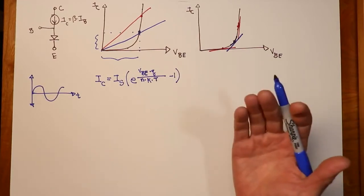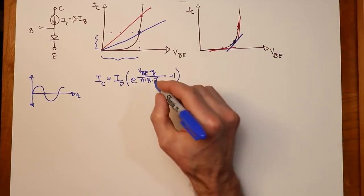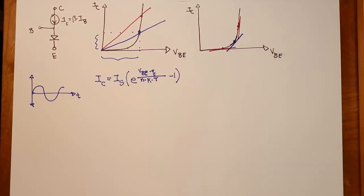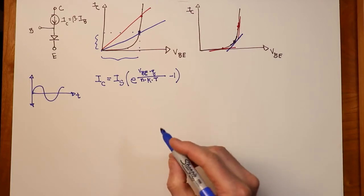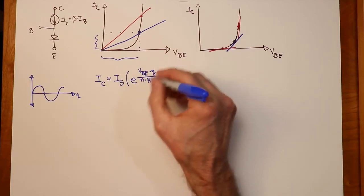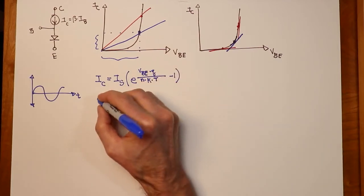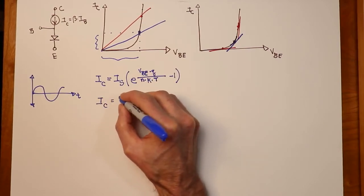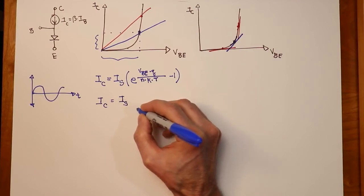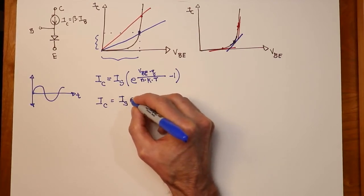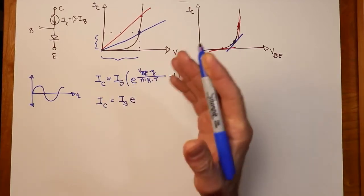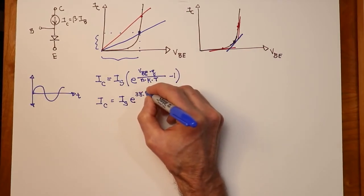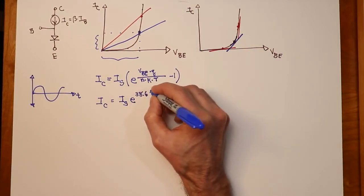At room temperature, if we were to use typically a value of T of 300 K, which would be kind of a warm room temperature, 80-ish degrees Fahrenheit, plug that in with the other constants, you will wind up with an IC that's equal to IS times E, this is approximate of course, 38.6 times VBE.